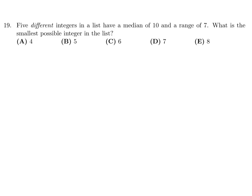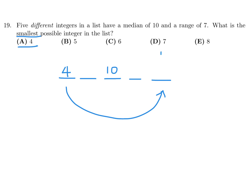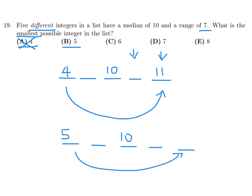Five different integers in a list have a median of 10 and a range of 7. What is the smallest possible integer? There are five integers with 10 in the middle. The range is 7. Let's try 4 as the smallest: that means the largest would be 11, but there's no room for a different integer between 10 and 11. That fails. Try 5: the largest would be 12, and we can put 11 in between — that works. So the smallest possible integer is 5, and number 19 is B.